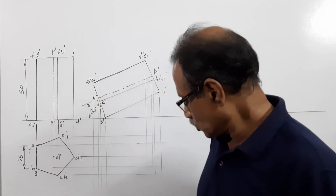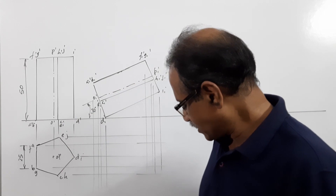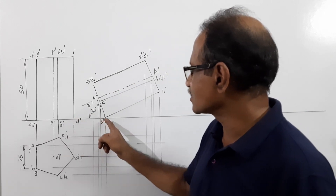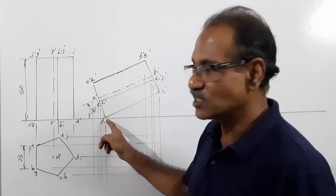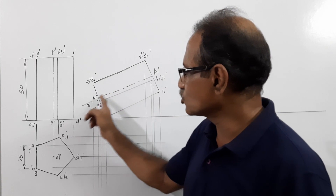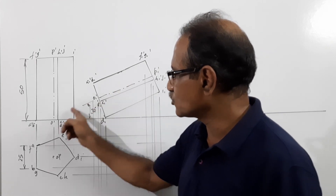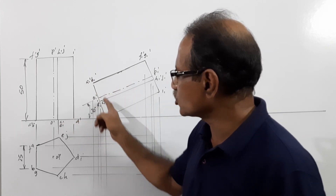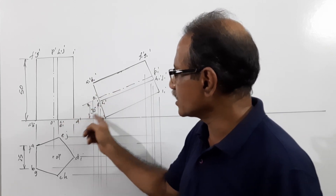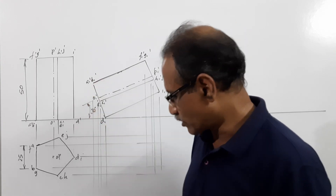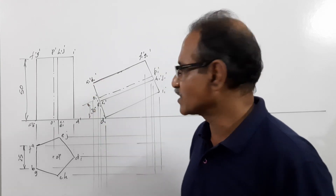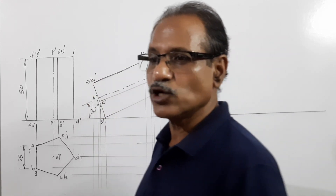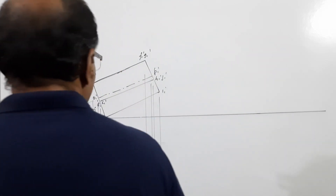I redraw the elevation in such a way that corner D' comes on the XY line and the axis line makes 30 degrees to the XY line — so this angle is 60 degrees, meaning the inclination to XY is 30 degrees. Then you retract that elevation and project a new plan.